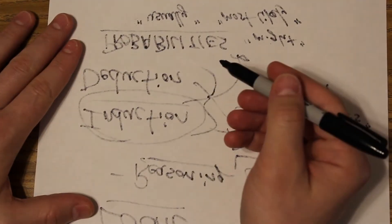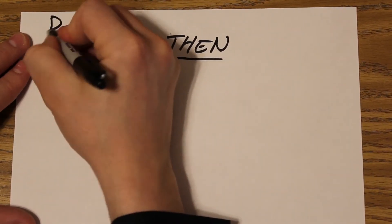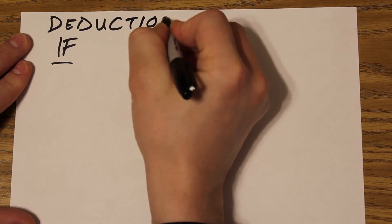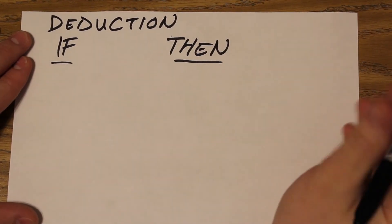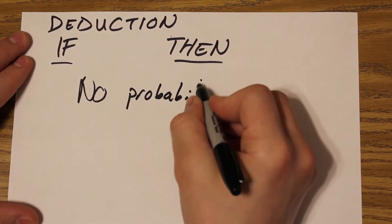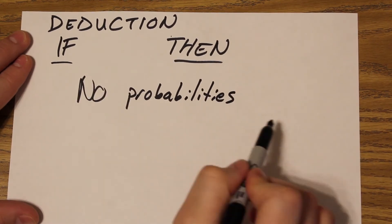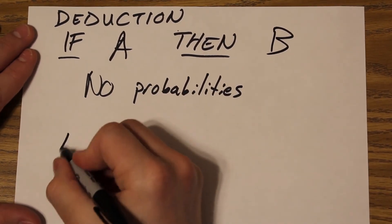But what about deduction? Deduction is where you're dealing with absolutes. It is certainty. Whereas induction was uncertainty, deduction is certainty. It's these absolute statements of if A, then B. There's no probability. There's nothing involved with uncertainty. It's if A certainly happens, then B certainly happens.